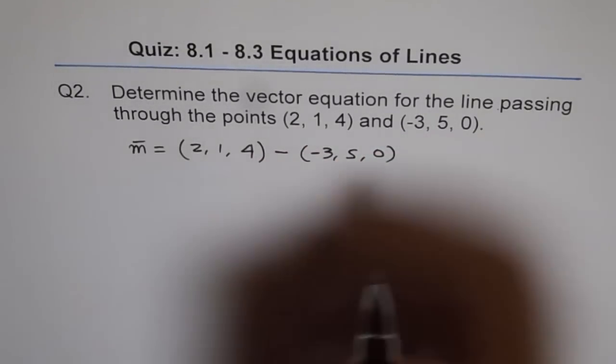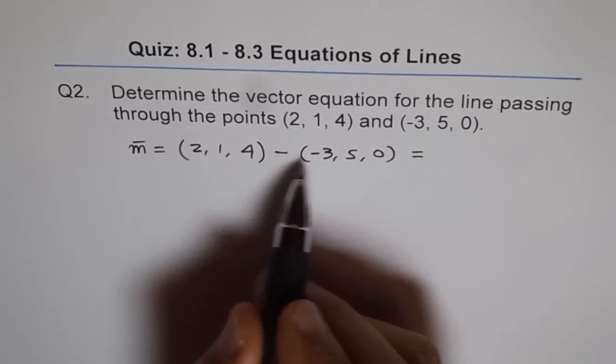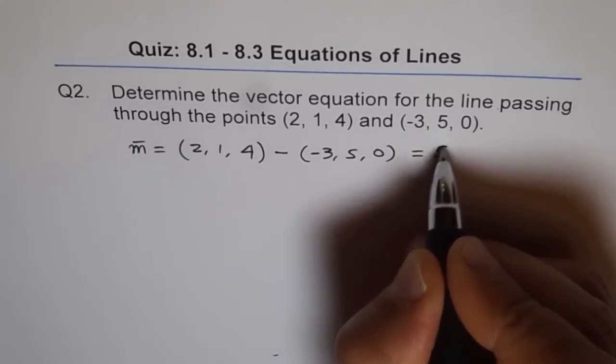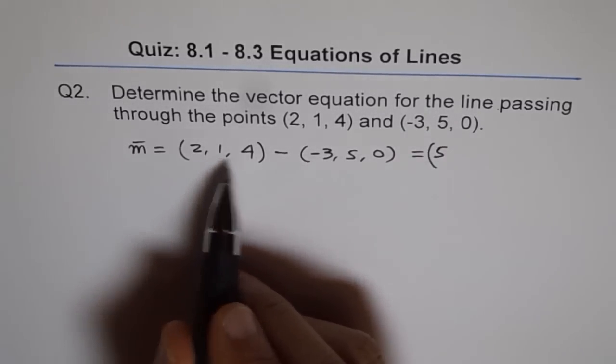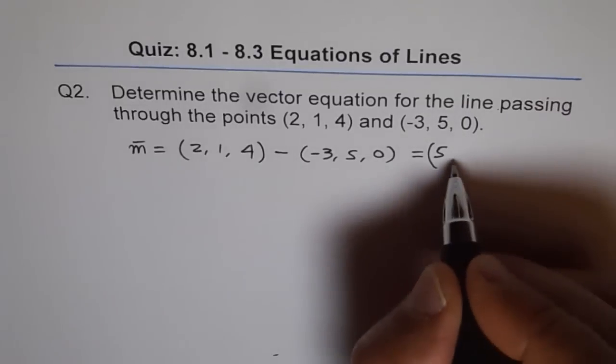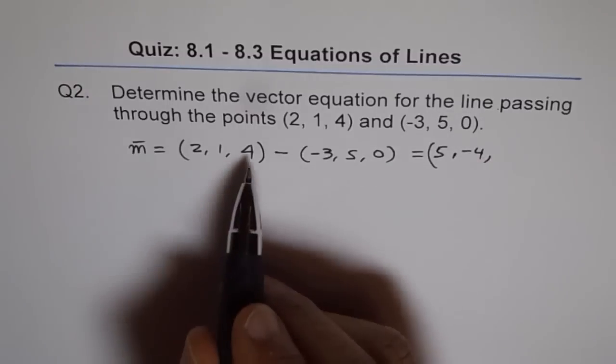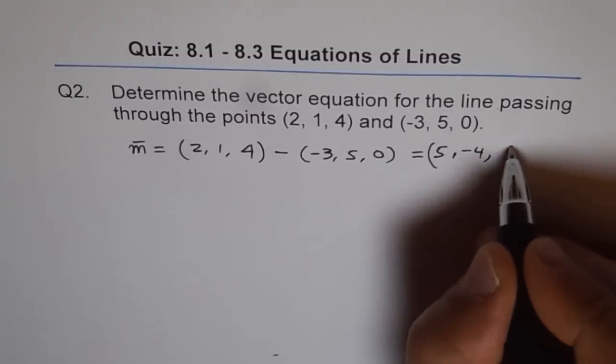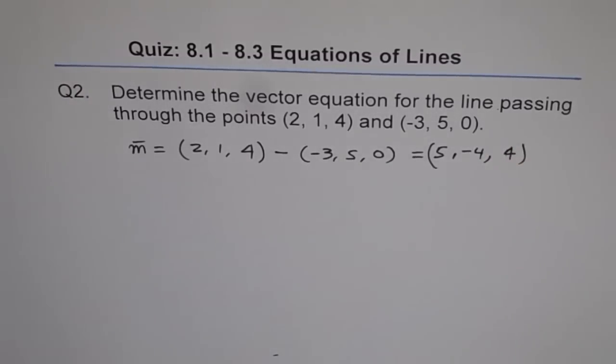That gives us 2 minus minus 3 is 5, and 1 minus 5 is minus 4, and 4 minus 0 is 4. So we know the direction vector and to find vector equation we need what? One direction vector and a point.